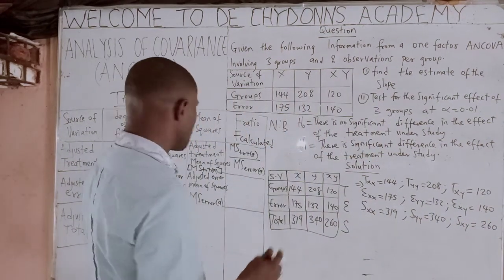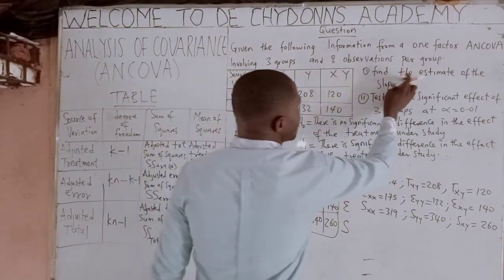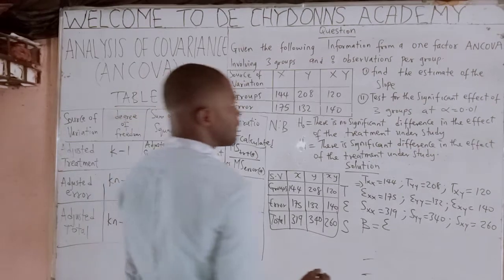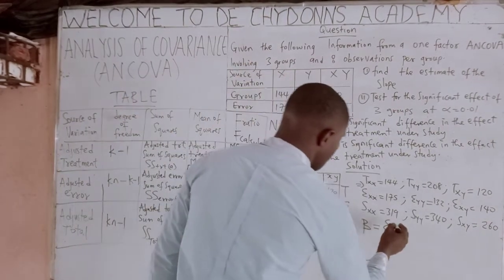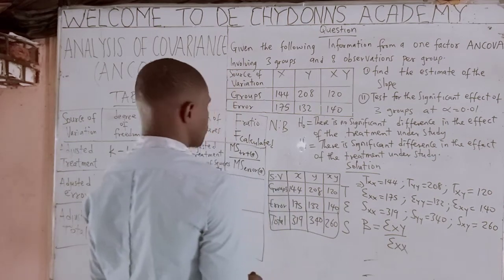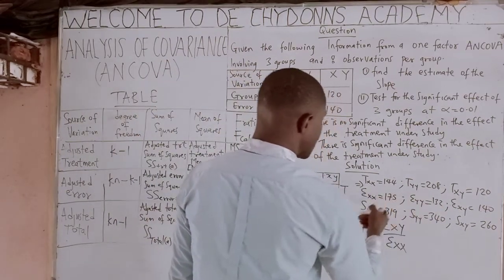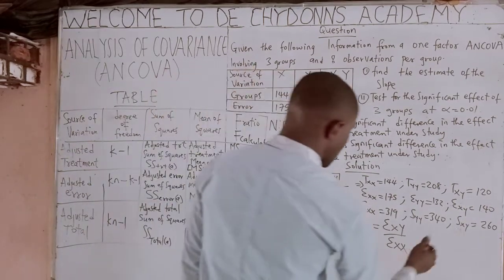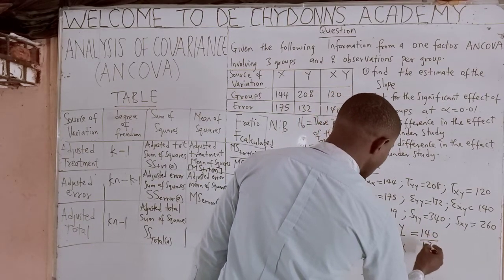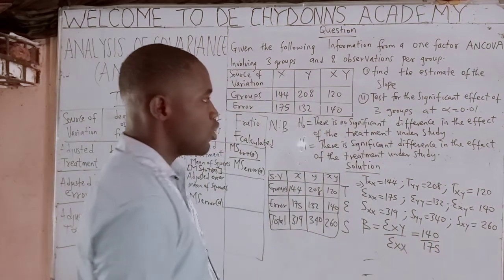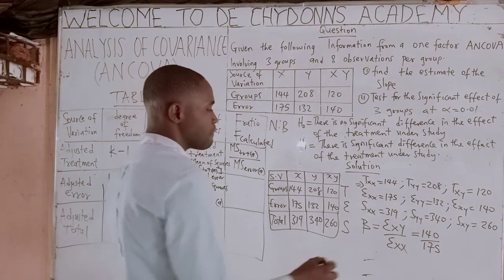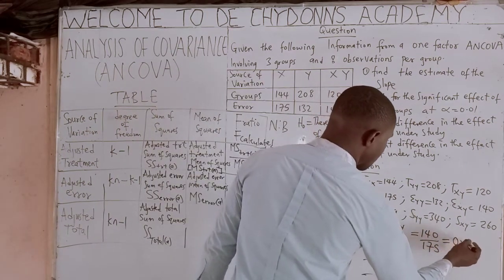Since they said find the estimate of the slope, from the formula: slope = E_XY / E_XX. That is 140 over 175. When you compute this with your calculator, it will give you 0.8.